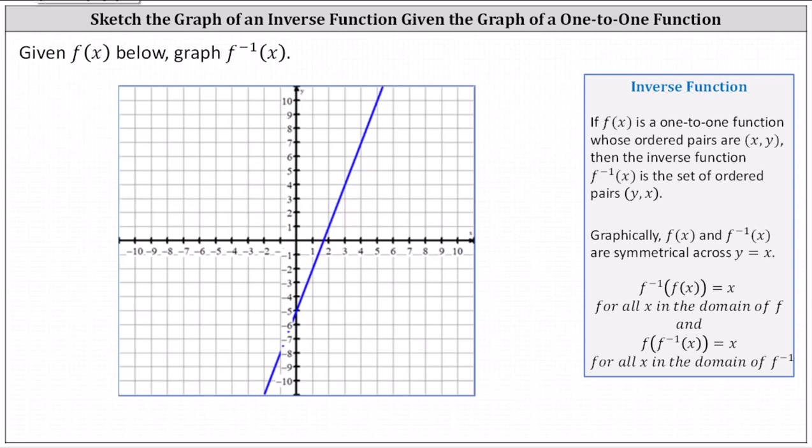Given the graph of the function f of x below, we want to graph f inverse of x. Looking at our notes on the right, if f of x is a one-to-one function whose ordered pairs are x comma y, then the inverse function, f inverse of x, is a set of ordered pairs y comma x.